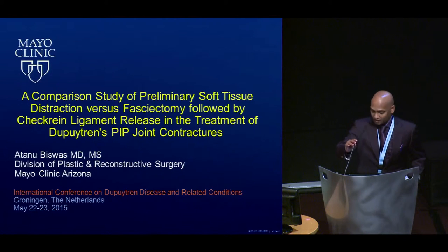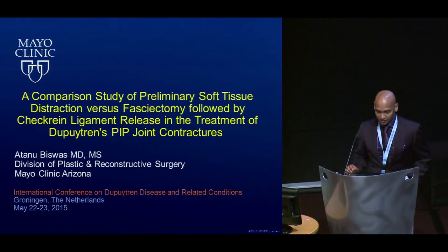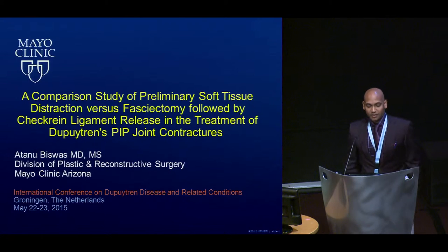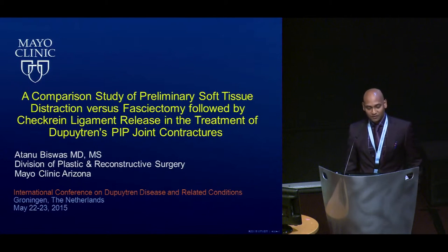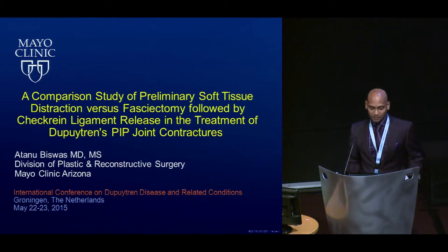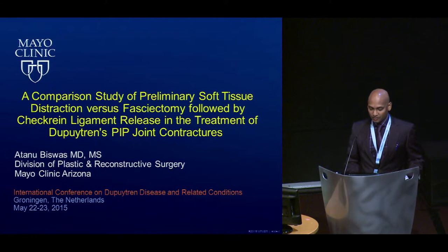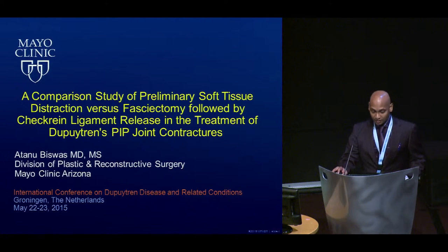Thank you for giving me the opportunity to present. I'm presenting on the comparison study of preliminary soft tissue distraction versus fasciotomy followed by check rein ligament release in the treatment of joint contractures — Dupuytren's PIP joint contractures.